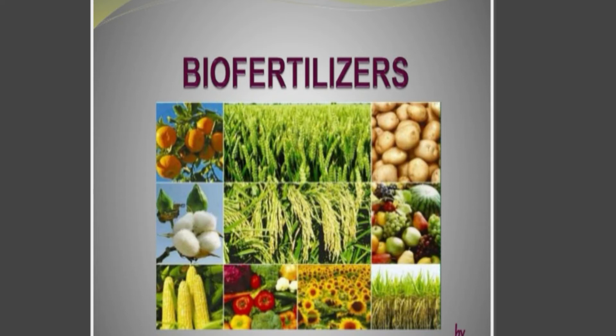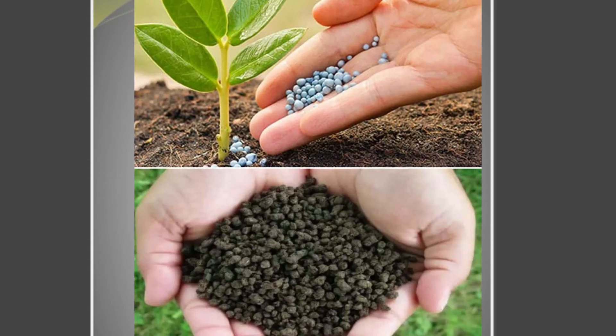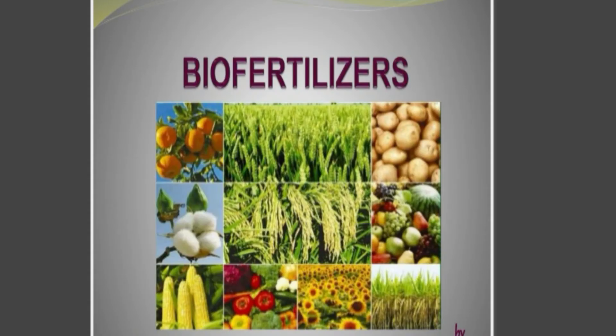The first one is bio and the second one is fertilizers. This means that bio is living, and fertilizers are the ones that can improve fertility. Bio fertilizers means living organisms that can improve our plants and trees.